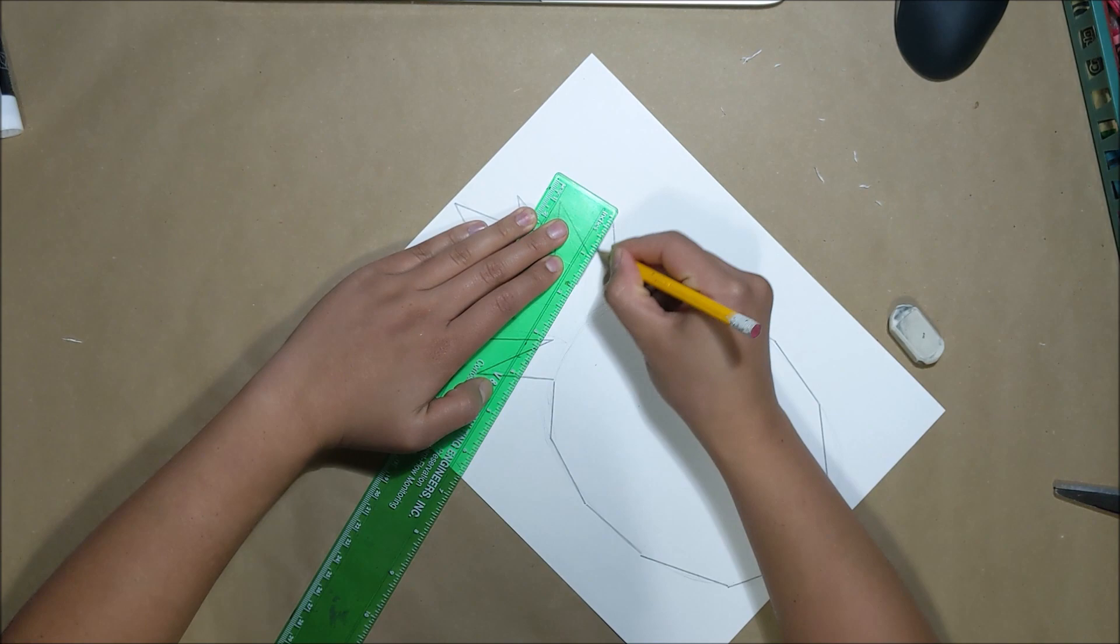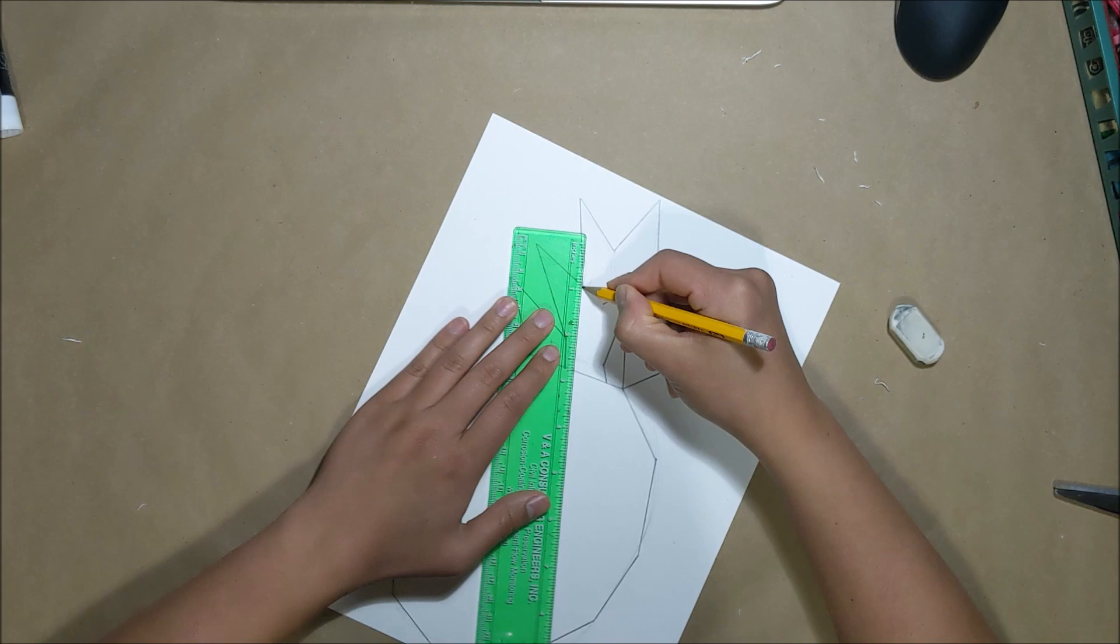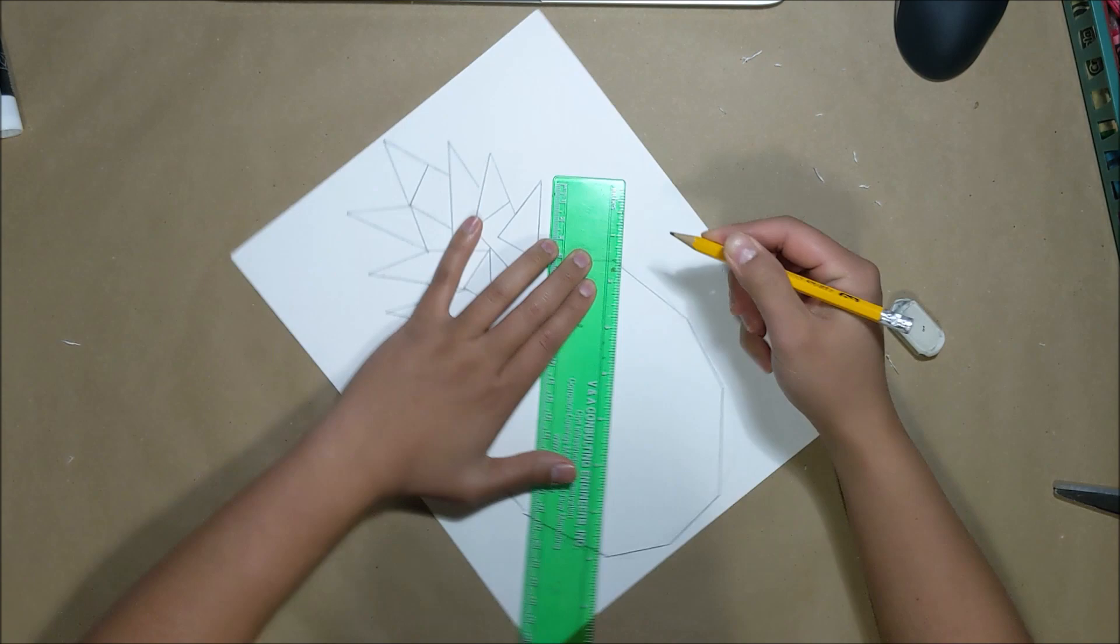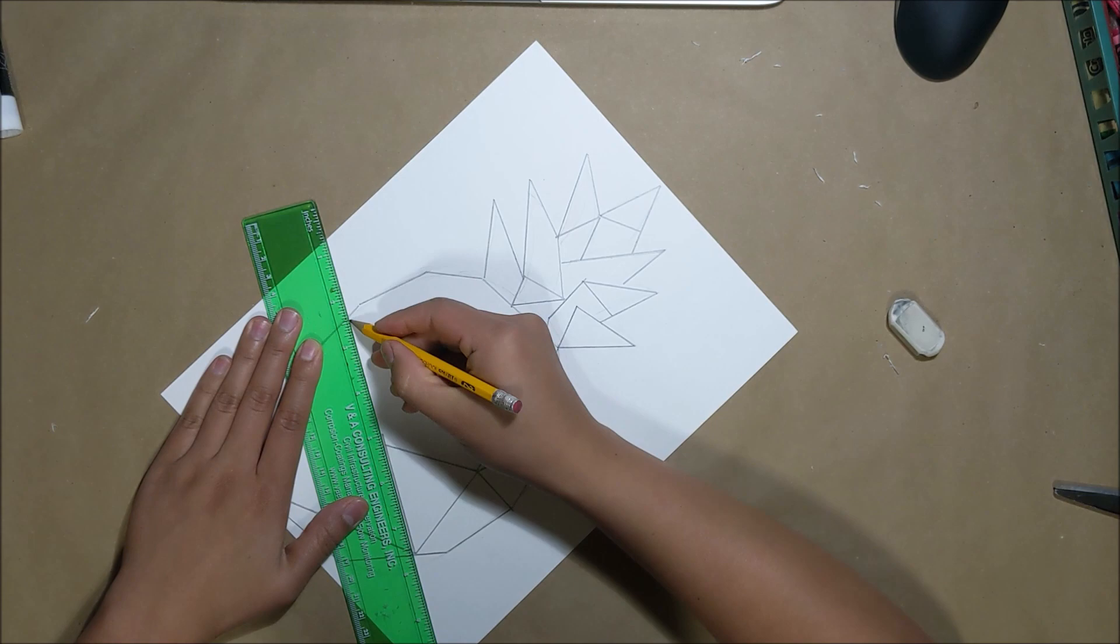Now that we have the outline of our geometric pineapple, we're going to go inside the space and create more straight lines. The rule of thumb is to create triangles, but you will also notice that I have some shapes that have four sides. Another great tip is to create lines that come from the corners.